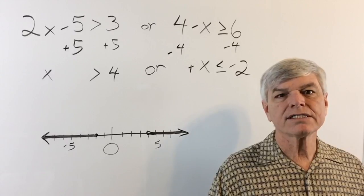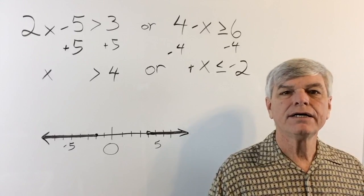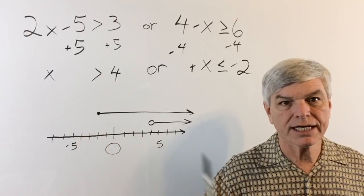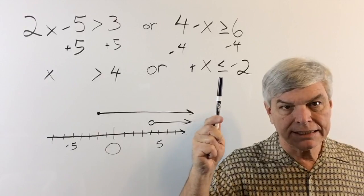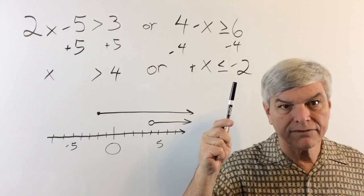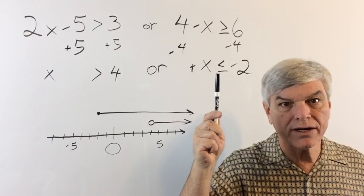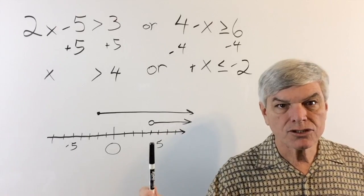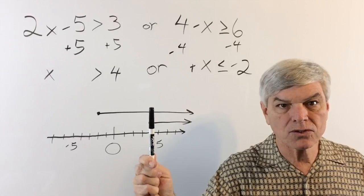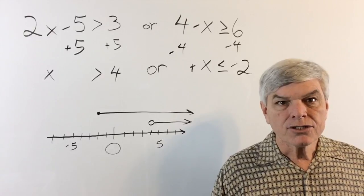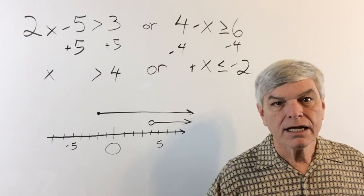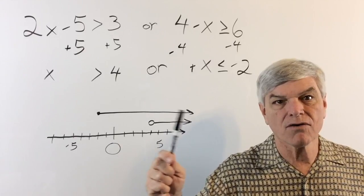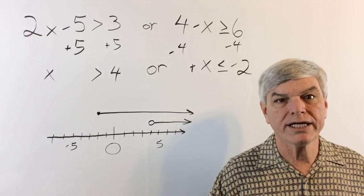Now let's look at two ways this could have gone differently. Keep the same first graph, x greater than 4, but change the second to x greater than or equal to negative 2 going in the other direction. Now there's overlap starting right where the lines meet, and both lines go to infinity in the same direction. We don't even need the shorter line — the longer line covers the overlap and all new territory, so we just draw one line.